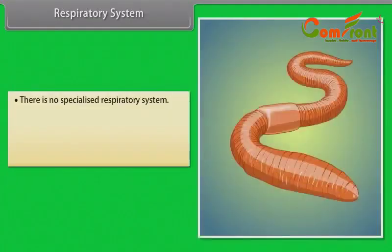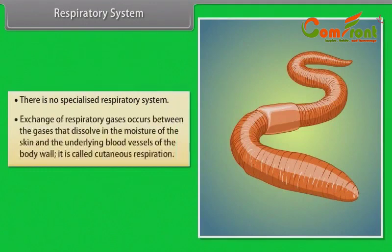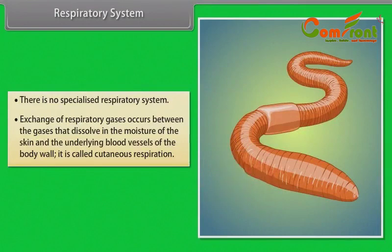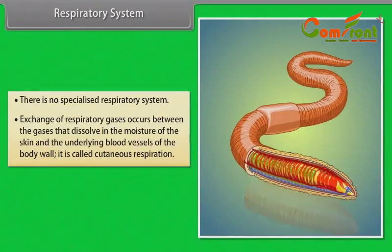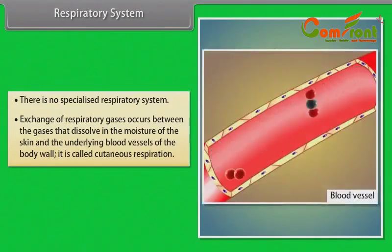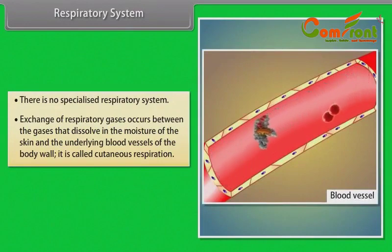Respiratory System: There is no specialized respiratory system in earthworms. Exchange of respiratory gases occurs between gases dissolved in the moisture of the skin and the underlying blood vessels of the body wall. This is called cutaneous respiration.